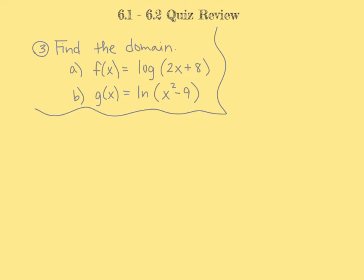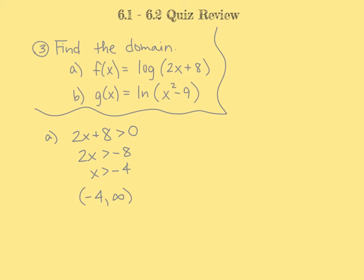In problem 3, we want to find the domain of each logarithmic function. No matter if we have a log or natural log, what goes inside of it must be positive. So in part A, we have to force what's inside our log function, 2x plus 8, to be positive, greater than 0. Since it's just a linear inequality, we solve. We don't flip the inequality because we didn't multiply or divide by a negative. Our solution is x greater than negative 4, which in interval notation is from negative 4 to infinity, not including negative 4.